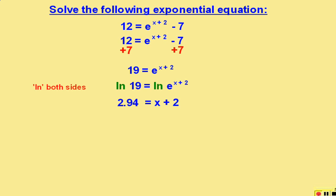To continue solving for x, we will subtract 2 from both sides. Our final answer for x will equal 0.94.